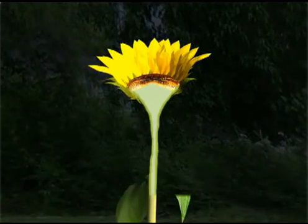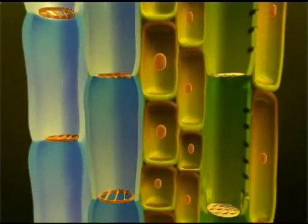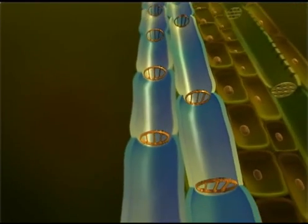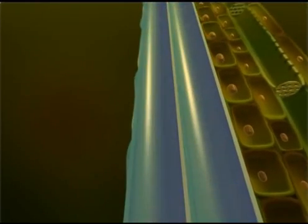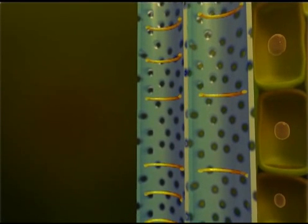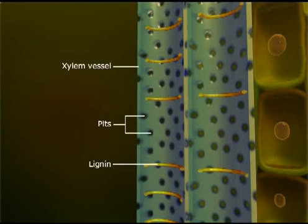Water that enters the root hair cells by osmosis is later transferred to the cortical cells and eventually reaches the xylem tubes. The xylem complex consists of long cells called tracheids. This xylem tissue is non-living and made of thick cell walls to give rigidity to the plant. The xylem conducts water and mineral salts to the leaves.